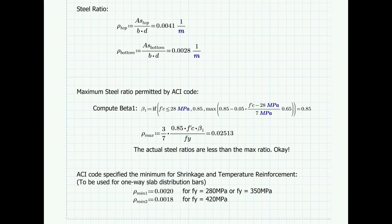We then calculate the steel ratio limits and compare them to the actual steel ratios. Since the actual steel ratios are less than the maximum ratio, we are safe, and this confirms the slab is indeed tension-controlled as initially assumed. Note that we will also use the minimum steel ratio to calculate the steel area for the distribution bars along the longer direction. Since the longer side is not critical, we use the minimum steel area as rebars for temperature and shrinkage purposes.